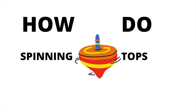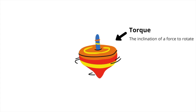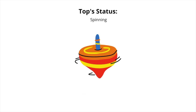How do spinning tops work? When you want to spin the top, you add something called torque, which is the inclination of a force to rotate. That converts the top's potential energy into kinetic energy.